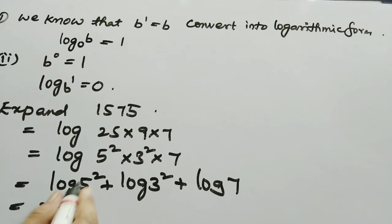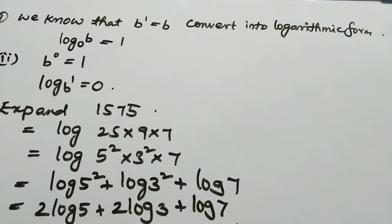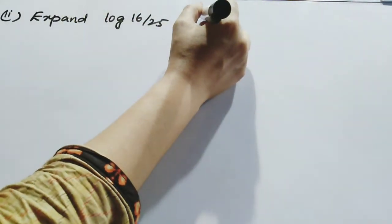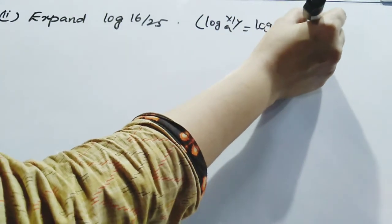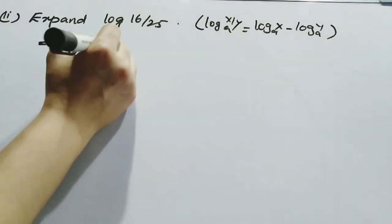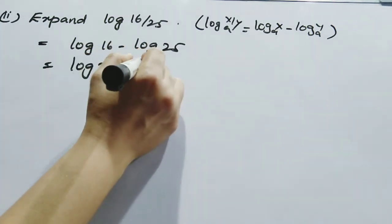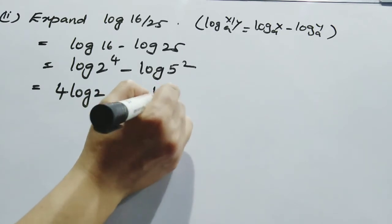Then applying the third property (power rule): 2·log 5 + 2·log 3 + log 7. Next, expand log(16/25). This uses the second property — the quotient rule — giving log 16 minus log 25. Factorizing: log(2⁴) minus log(5²), then applying the power rule: 4·log 2 minus 2·log 5.